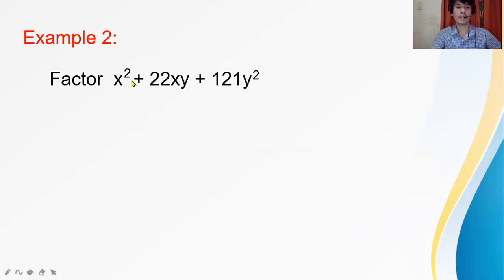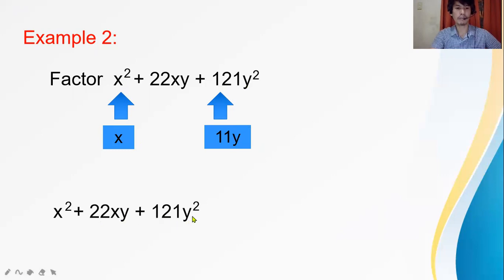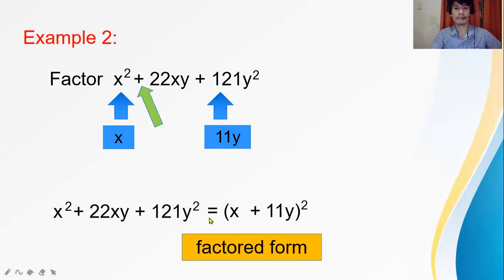Next: factor x squared plus 22xy plus 121y squared. The first and last terms are perfect squares. The square root of x squared is x, and the square root of 121y squared is 11y, because 11 times 11 is 121. The sign of the middle term is positive, so copy positive. Square the binomial. Therefore, the factored form is (x plus 11y) squared.